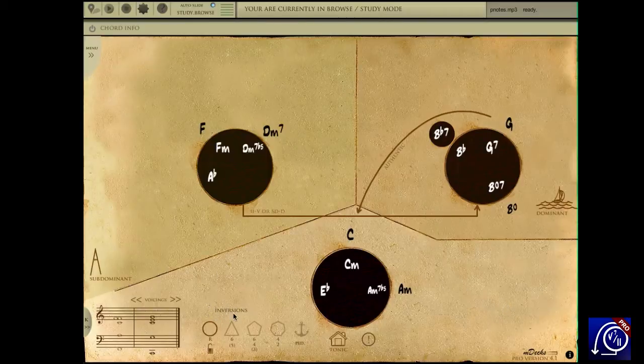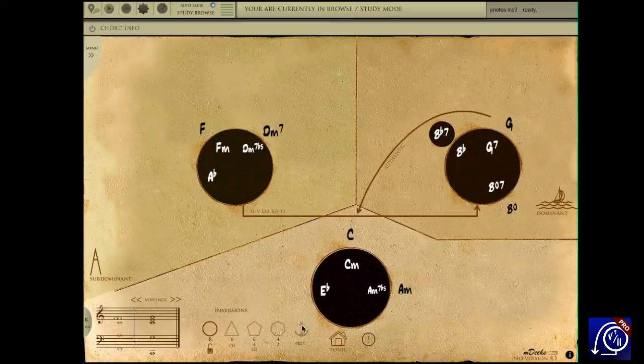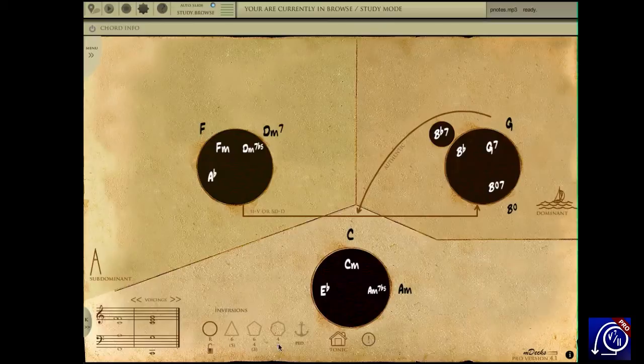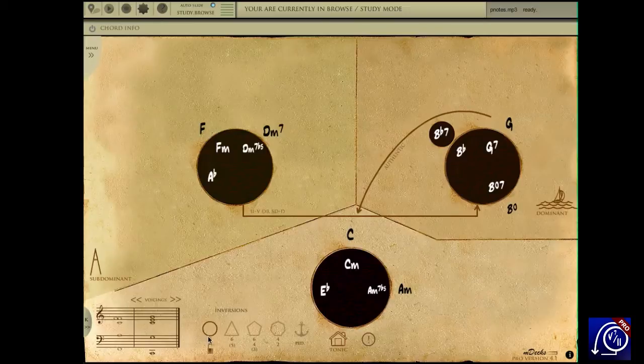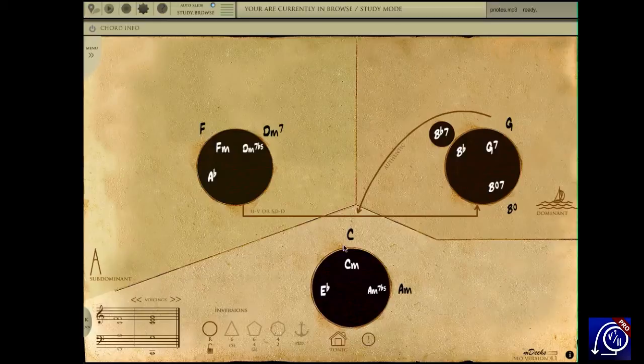The inversions panel is located here at the bottom of the screen. Each inversion is represented by a specific shape which reflects the interval being played by the bass. The root position is represented by a circle and labeled R. It is also the default inversion.